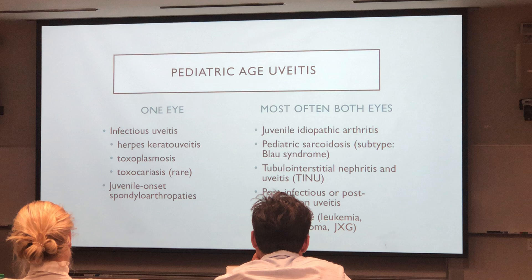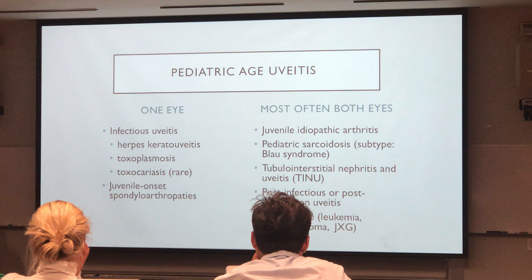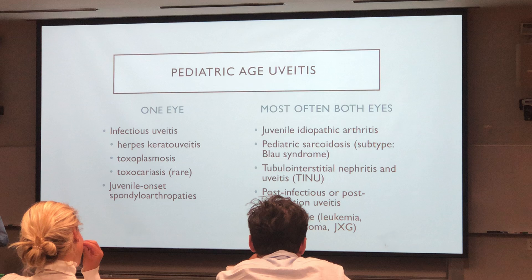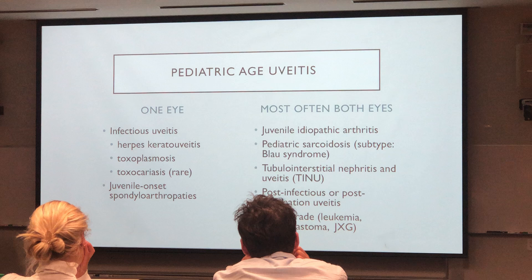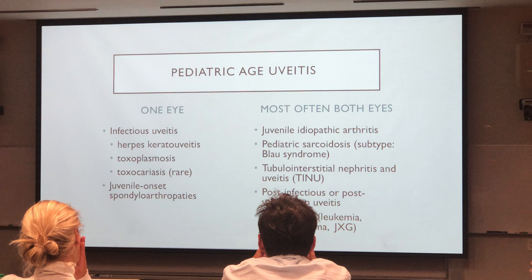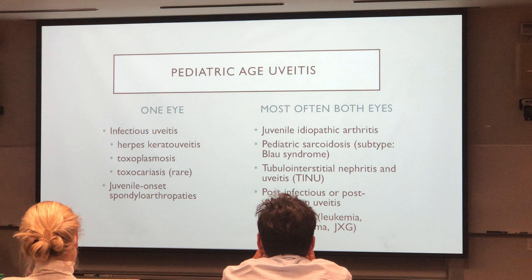Age is an important factor. In uveitis, when a patient comes in and is under five, my differential diagnosis is very short. If it's one eye, I look for an infectious uveitis — herpes — and if there are cells in the vitreous, I look for toxoplasmosis or Toxocara. HLA-B27-associated uveitis is possible if the child is over 10 or 12 years of age, but it's rare and not seen in two- to three-year-olds.